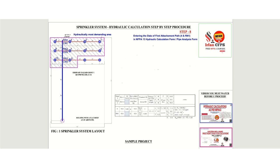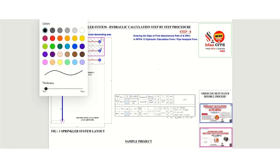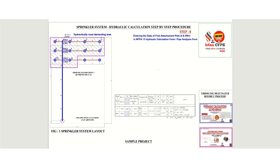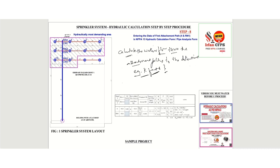Now we are going to discuss Step 8. This will be interesting since we are going to enter the data of the first attachment path, which is node 4 to RN1, in the NFPA 13 hydraulic calculation form — also called the pipe analysis form. What we are going to do initially is calculate the water flow through the attachment paths to determine the equivalent K factor.